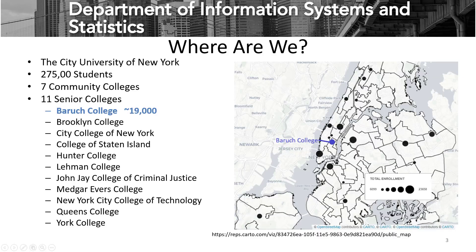So first off, where are we? We're within the City University of New York, which has about 275,000 students spread across seven community colleges and 11 senior colleges. Baruch is one of those senior colleges. We have about 19,000 students, and we are located right here in the heart of Manhattan on 25th Street.